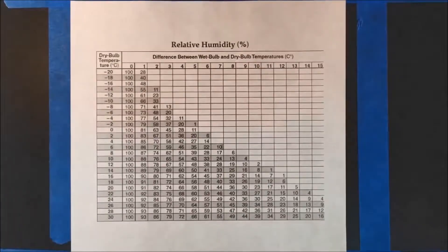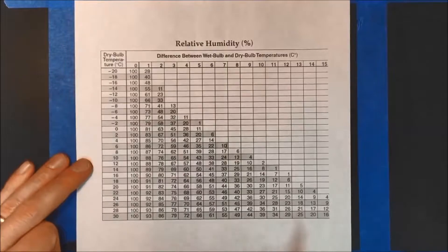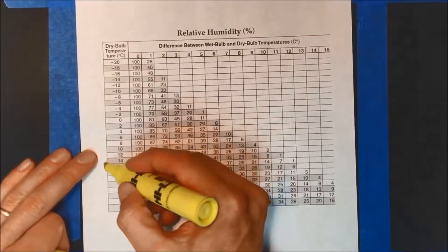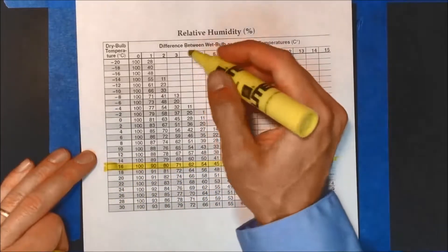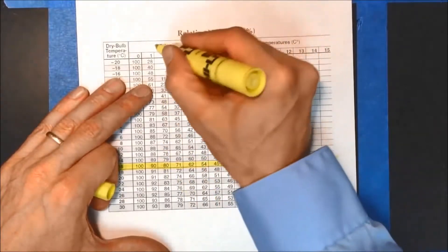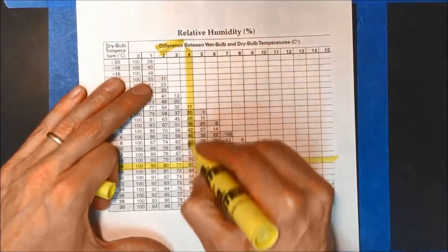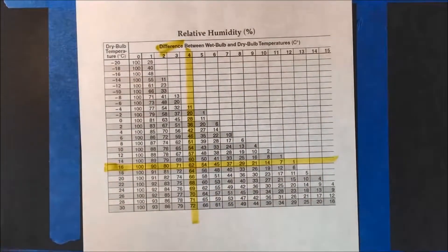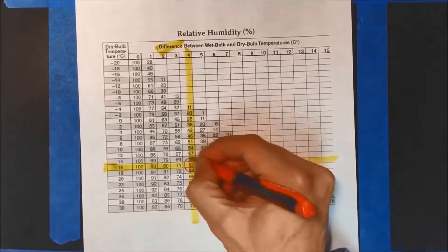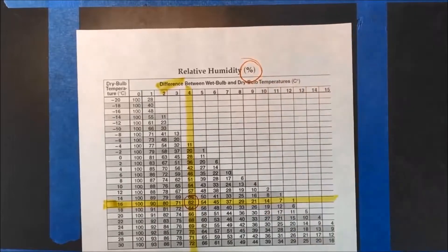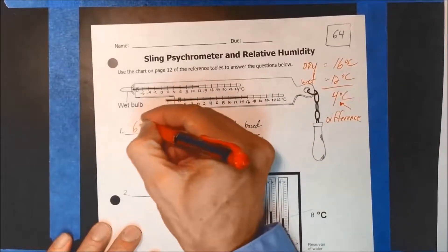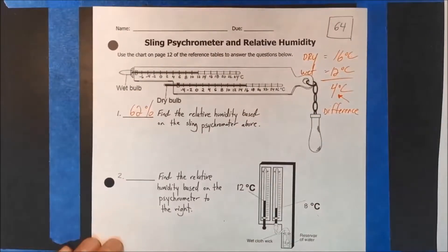So I'm looking for a dry bulb of 16 C and a difference of 4. Let's go to the reference table. Now I have the benefit of using a highlighter here. What did I say? 16 and 4. So 16 dry bulb. You probably should not highlight in your reference table because you have to use it over and over. And then going down in the difference column, again I can't stress that enough, difference. And where they meet, as you can see, is 62. 62%. The air is 62% full of water vapor in this instance.